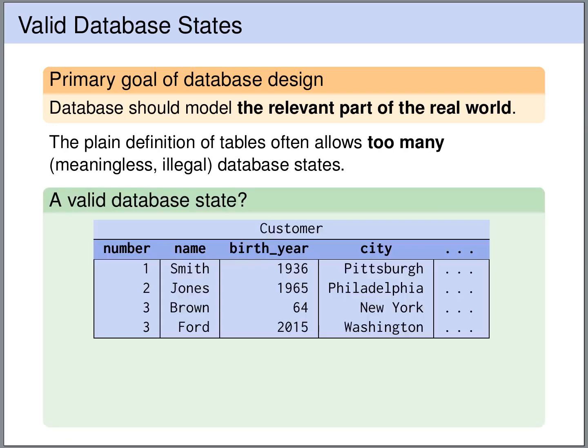For instance, look at the following table. We have customers with a number, a name, a birth year, and a city. If you look at this table, you quickly find several problems. For instance, we have two customers with the number 3. We would like to have a constraint that expresses that different customers have different customer numbers.